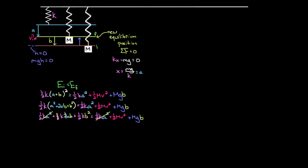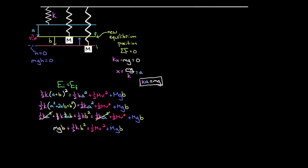Now, what is K times A? From our equilibrium condition, KA = MG. So we replace KA with MG on the left side, giving MGB + one-half KB². But MGB also appears on the right-hand side as the gravitational PE term. So MGB cancels from both sides! Magically, we're left with exactly the same relationship we had for the horizontal spring, but now measured from the new equilibrium position: one-half KB² = one-half MV².